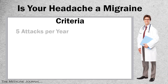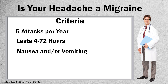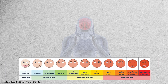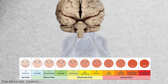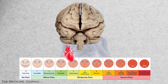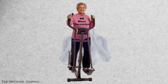You must have at least five attacks a year with the same presentation. The headache lasts four to 72 hours, be associated with nausea and/or vomiting, and come with photophobia or phonophobia. The pain must also be on one side of your head, have a pulsating quality that is moderate or severe, and is aggravated by or causes the avoidance of physical activity.